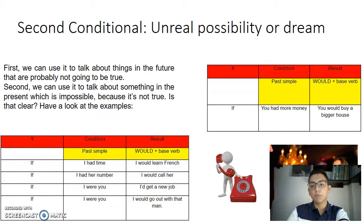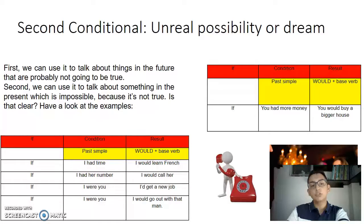For example: if you had more money, you would buy a bigger house. Second, we can use it to talk about something in the present which is impossible because it is not true.